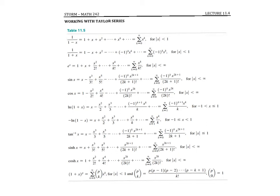In our last section, 11.4, we're going to use known Taylor series to evaluate things such as limits or definite integrals. Make sure you have this table handy. Most of what we do in this section will be based off of this table — table 11.5. It gives you the function, the expansion, the Taylor series or power series, and it also gives you the interval of convergence.